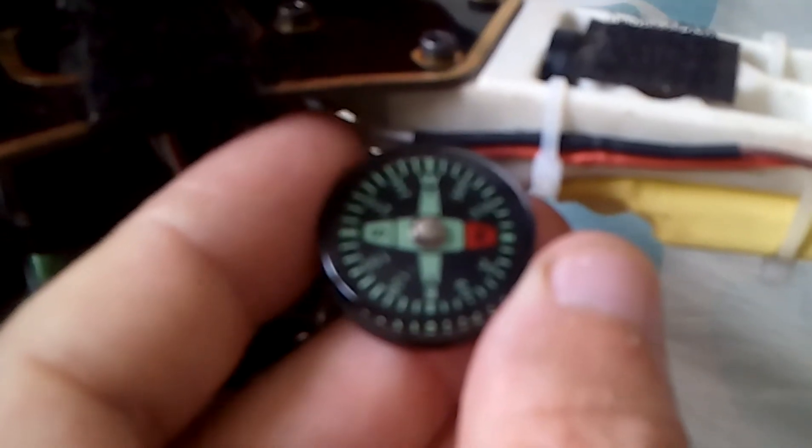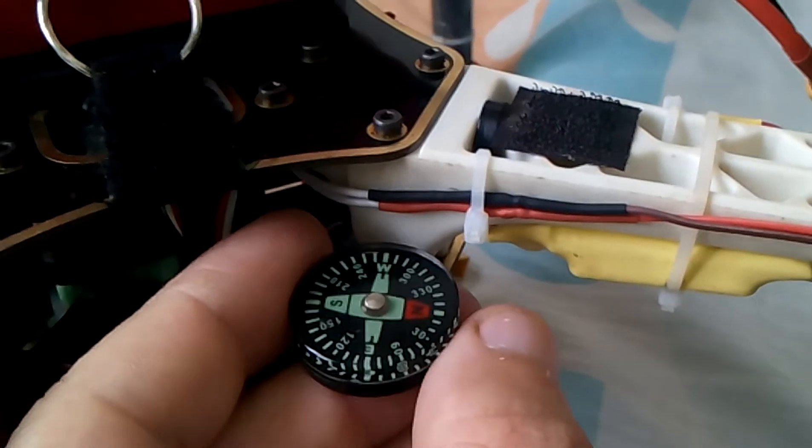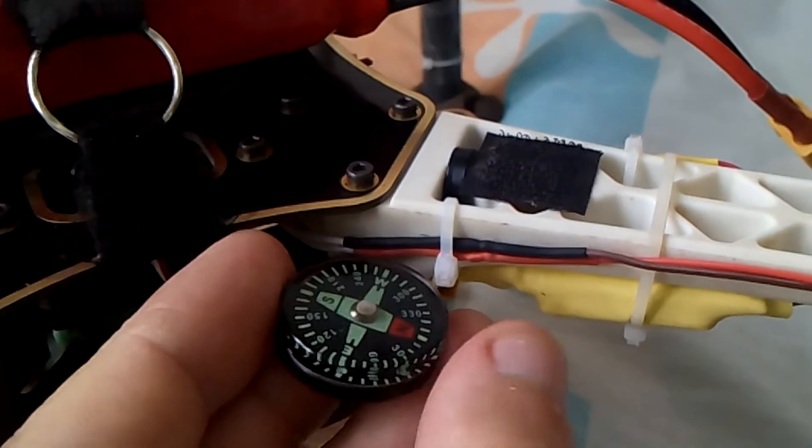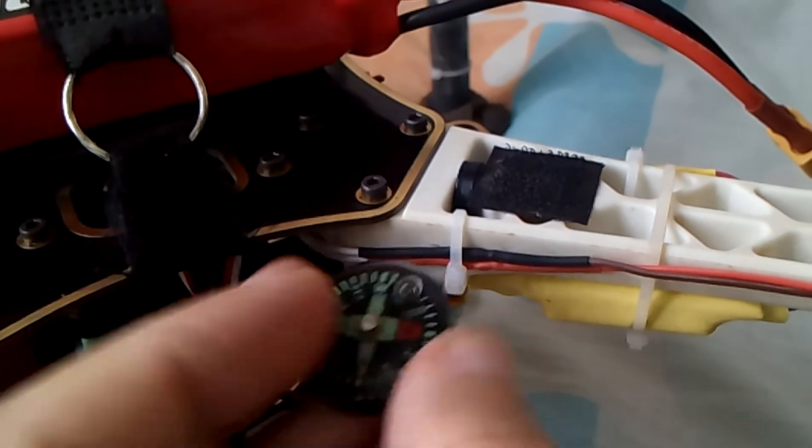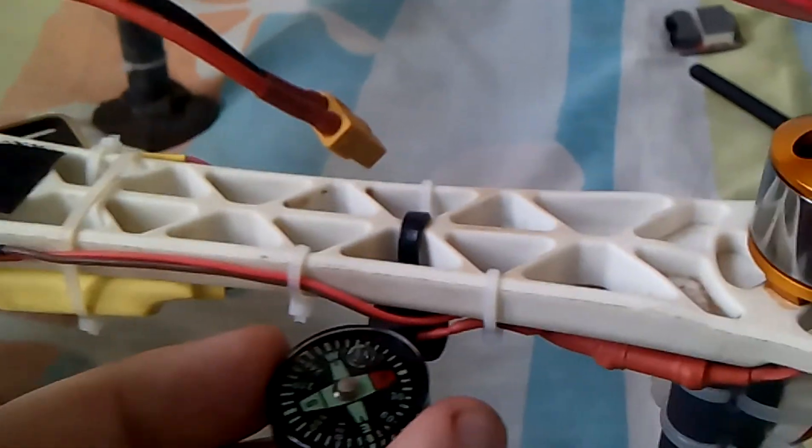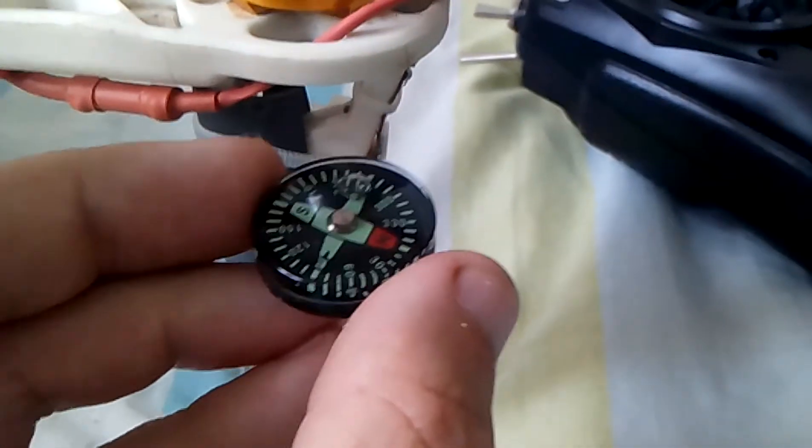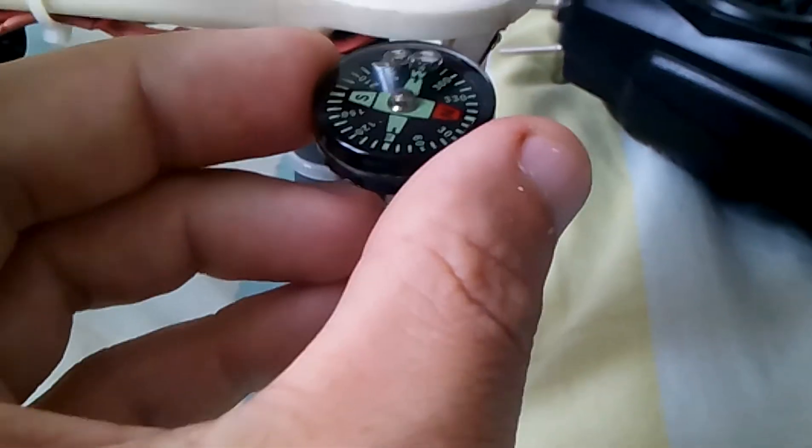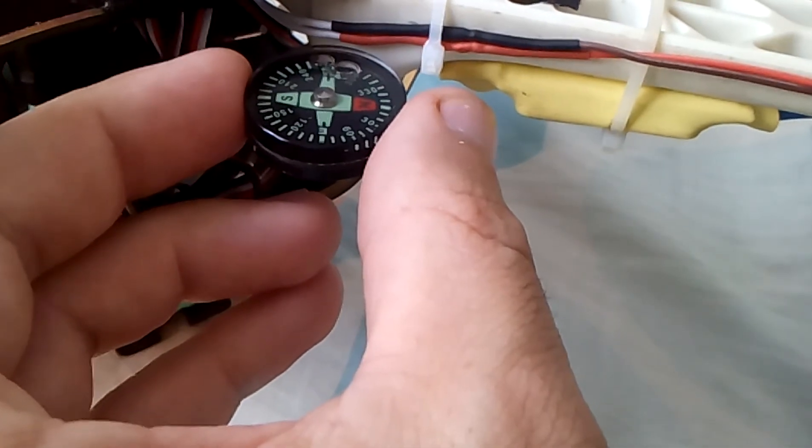Okay, simple test with this once again if I can get this camera to focus. So it's pointing north. See, I can turn it around, it keeps on pointing the same direction. Bring it next to the beeper and it starts drifting. See, this is a magnet.